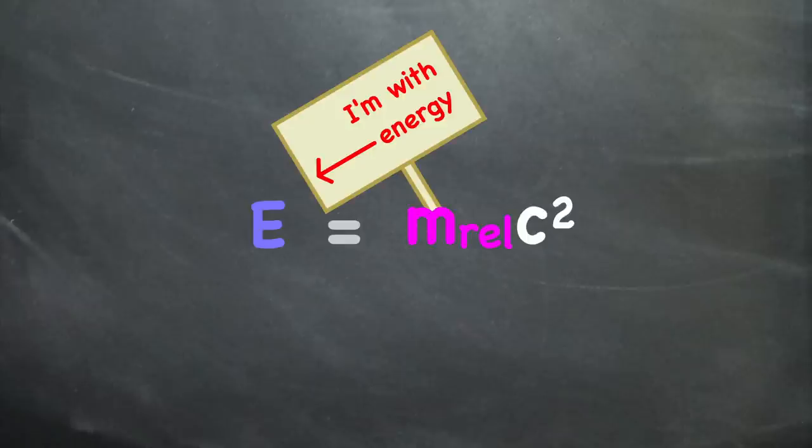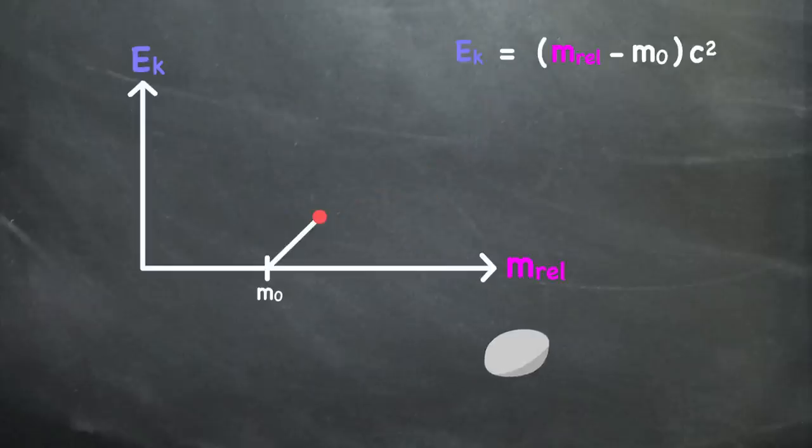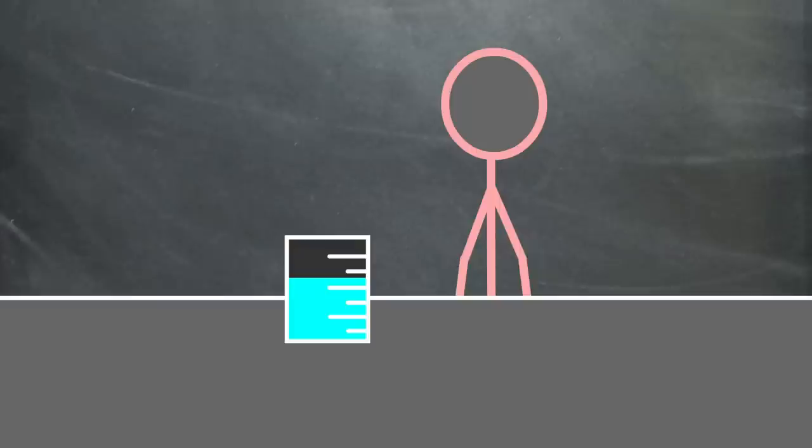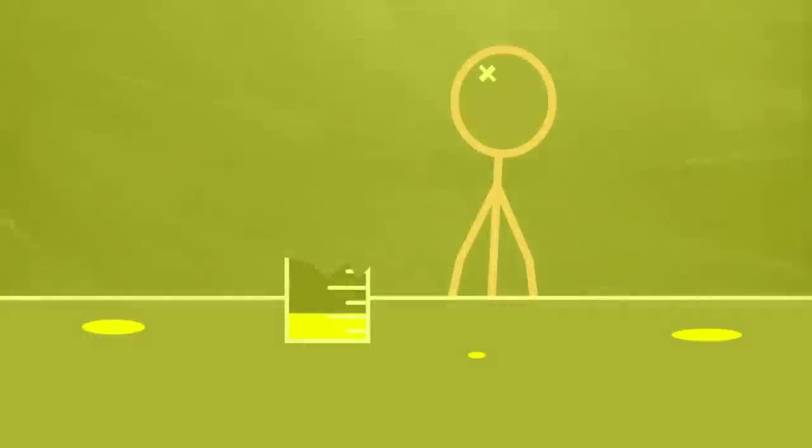So to review, E equals mc squared means that mass is a physical representation of energy itself. This is motivated by the way mass and kinetic energy increase together under relativistic conservation laws. But is this all really true? Let's have a look! In particle accelerators, the total sum of the rest masses of particles is not conserved. Yes, your chemistry teacher lied to you. The conservation of mass is not always true.